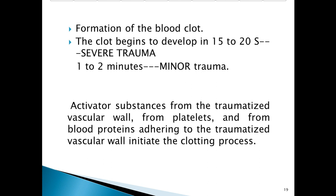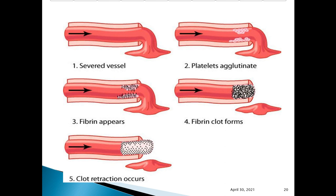Activator substances from the traumatized vascular wall, from platelets, and from blood proteins adhering to the traumatized vascular wall initiate the clotting process. This clotting process will be discussed in a lecture on intrinsic and extrinsic pathways of clotting. As you can see, in the injured vessel there is platelet agglutination, platelet plugging, and then appearance of fibrin threads.